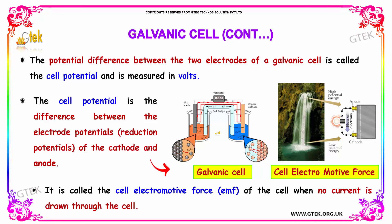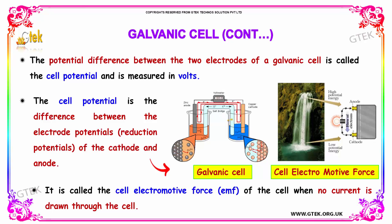The potential difference between the two electrodes of a galvanic cell is called the cell potential, and it is measured in volts. The cell potential is the difference between the electrode potentials of the cathode and the anode. It is called the EMF of the cell when no current is drawn through the cell.